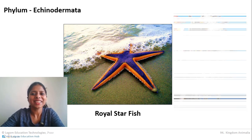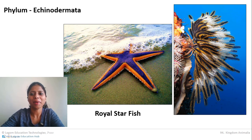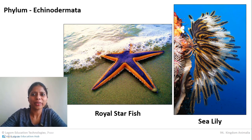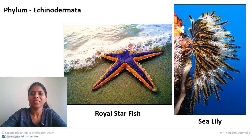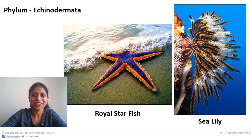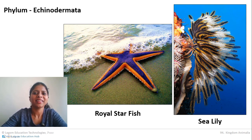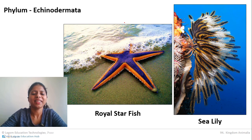The next example of Echinodermata is the sea lily. These animals generally stay along with corals — you can see corals on the downside and the sea lily growing above them. Sea lily also has a beautiful color combination and a very beautiful appearance. Other animals included in Echinodermata are similarly beautiful, and we will see more examples later.